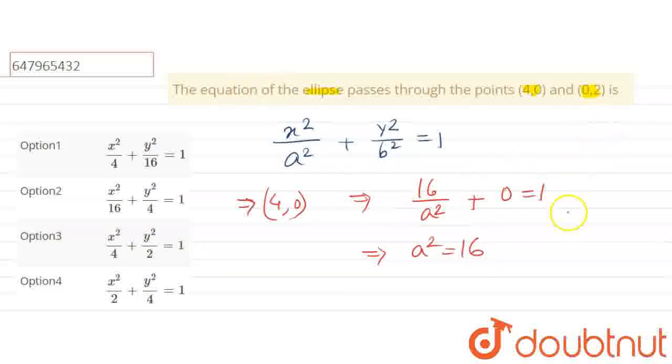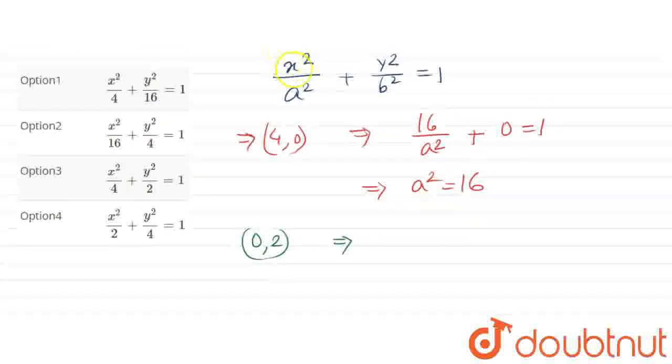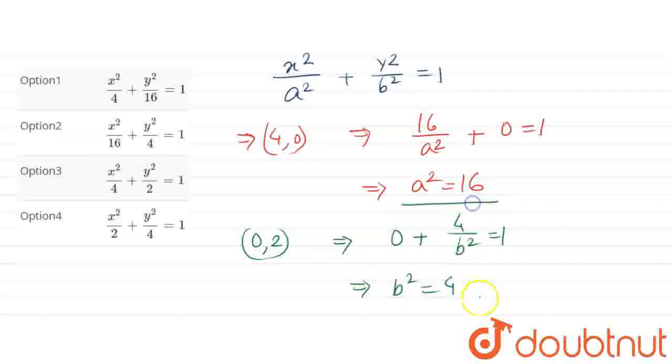Now we'll use the second point (0,2). Substituting x = 0 and y = 2: 0 by a², that is 0, plus 2 squared = 4 by b² equals 1. Simplifying this, we get b² = 4.